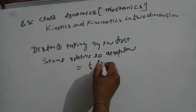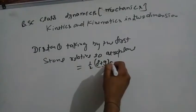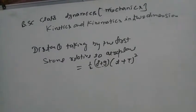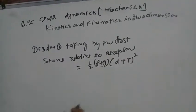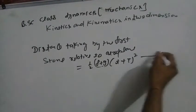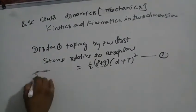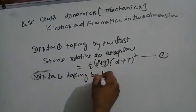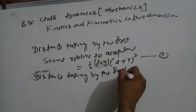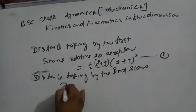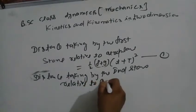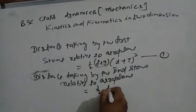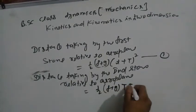Distance taken by the first stone relative to the aeroplane: ½(f + g)(t + T)², since u = 0, this is equation number 1. Distance taken by the second stone relative to the aeroplane: ½(f + g)·T², equation number 2.